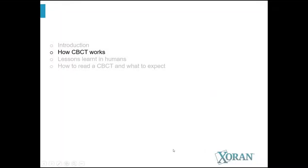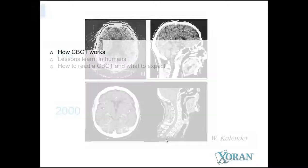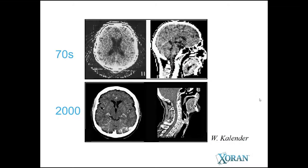So how does cone beam CT work? What's inside the machine? Without spending too much time, I want to show you what matters to you in terms of the technology itself. Cone beam CTs and CT scanning in general have evolved quite a bit since the 1970s — this is when it all started, following the classic progression of computers. You start to see the first CT scan in the early 1970s, initially developed for brain tumors.